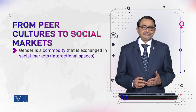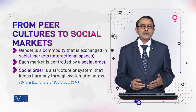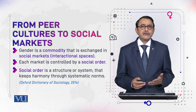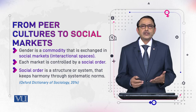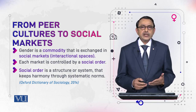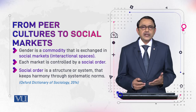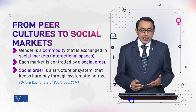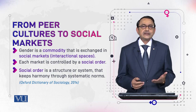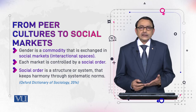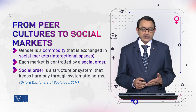Sociologists say gender is a commodity — something to offer and to be exchanged. This is the language of market and economy, but sociologists use it purposefully. Gender is exchanged in social markets, which are not business markets but interactional spaces and places. Each social market is controlled by a social order, just as business markets have rules and regulations and norms.